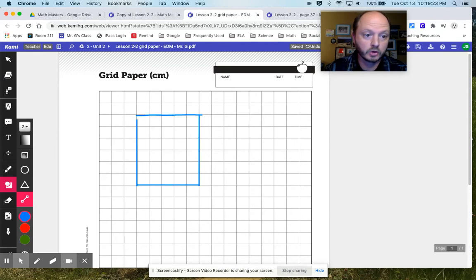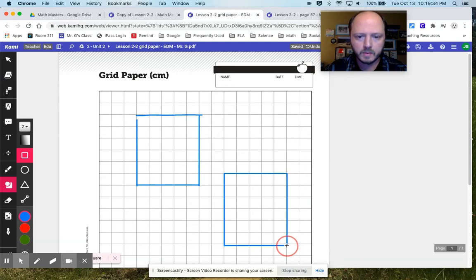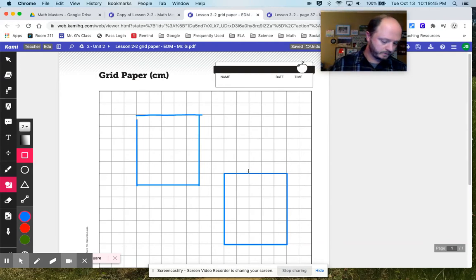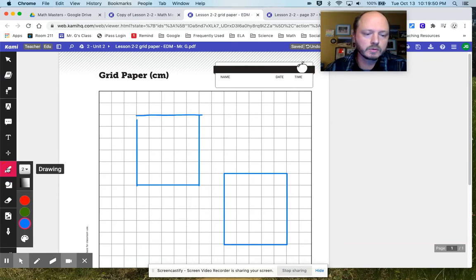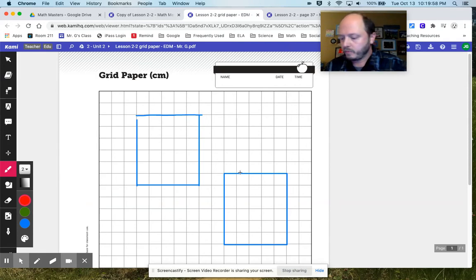Now, I could have used the rectangle tool, and that would have been another easy way to create my shape, right? That probably actually would have been the much easier way to create my shape. Anyway, multiple ways to do it.